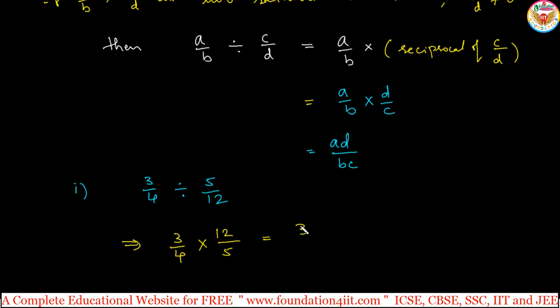Then normal, now we can continue the multiplication process. 3 into 12, how we did it in the multiplication of rational numbers, right? The product of their numerators by product of their denominators, same we will apply here. 3, 12, 36. 4 into 5, 20.